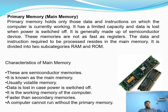Next we move to primary memory, that is main memory. Primary memory holds only those data and instructions on which the computer is currently working — while the system is in the on state. It has a limited capacity and data is lost when power is switched off. If you switch off the power, it will lose all the data stored in primary memory. It is generally made up of semiconductor devices. These memories are not as fast as registers or cache memory. The data and instructions required to be processed reside in the main memory.